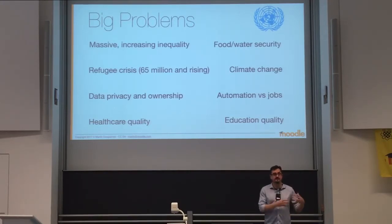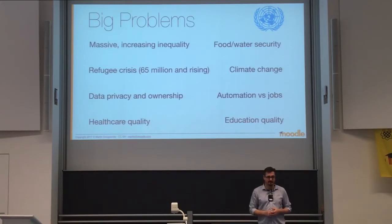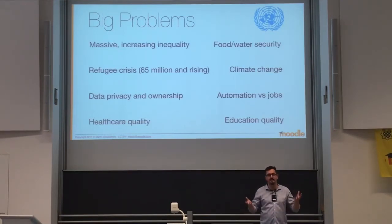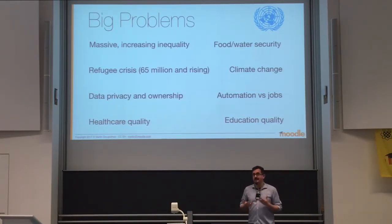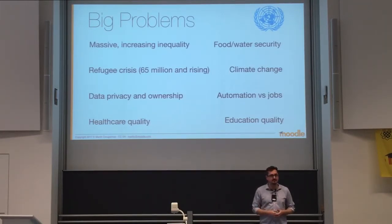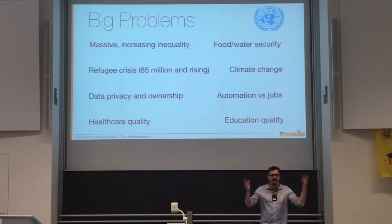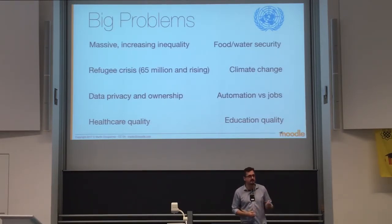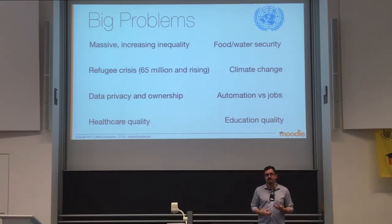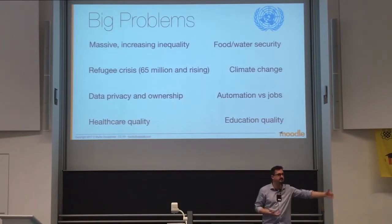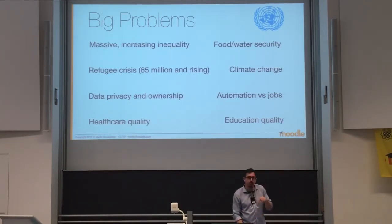We have a refugee crisis — Germany is doing very well in that, I have to say. A lot of countries are not. 65 million people on the move. Climate change. Data privacy and ownership — very big wars being fought over data: who owns our data, who controls our interactions? Automation and jobs — what does it mean when we automate our jobs? Healthcare quality and education quality. These are very big problems. We are all living in this world and most of us have children. And this is why I'm in this business — education is actually connected to all of this.